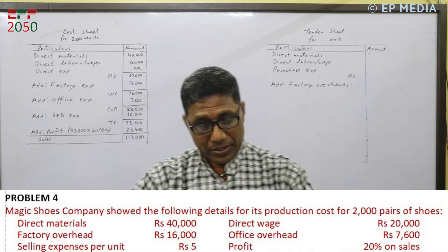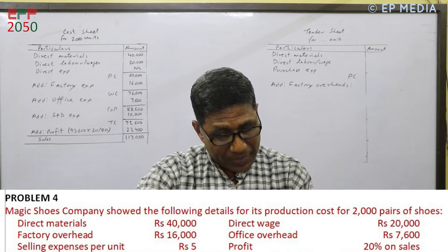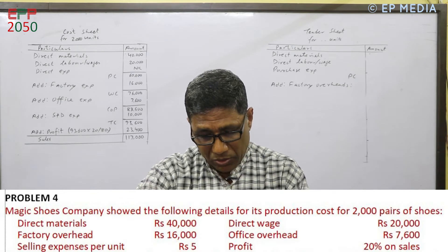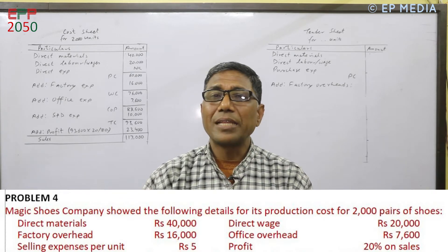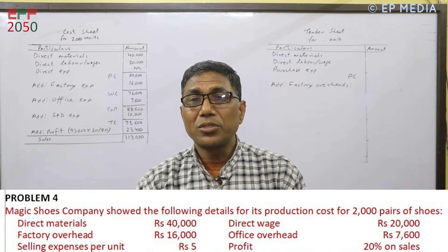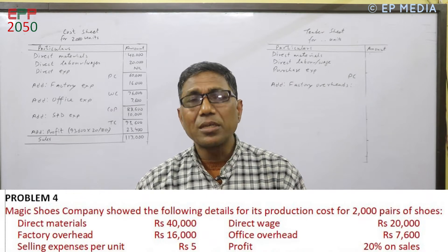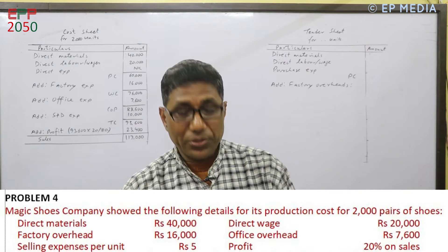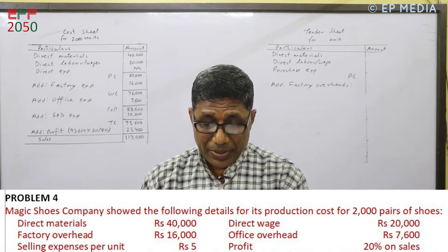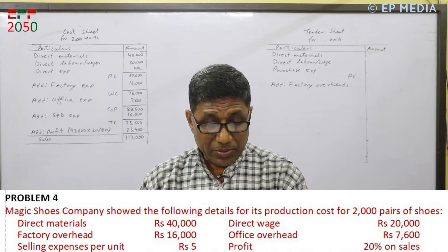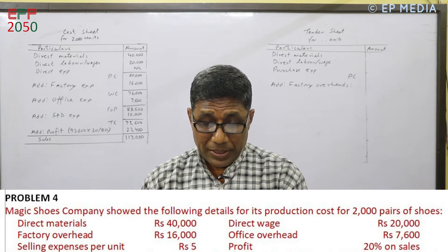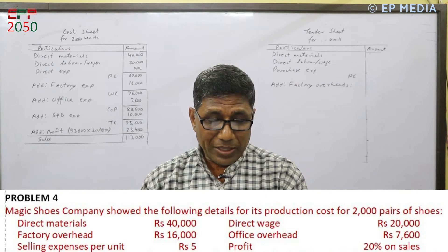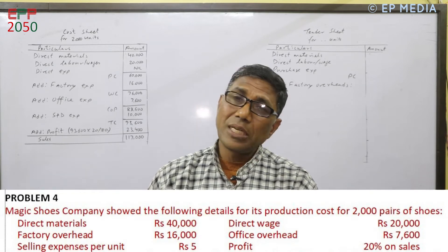Now, the question is: the Magic Shoes Company stores the following details for its production costs for 2,000 pairs of shoes. You can see the data for this company. You can make: direct material, direct labor, factory overhead, office overhead. The selling price per unit is 5,000, and profit is 20% on sales.